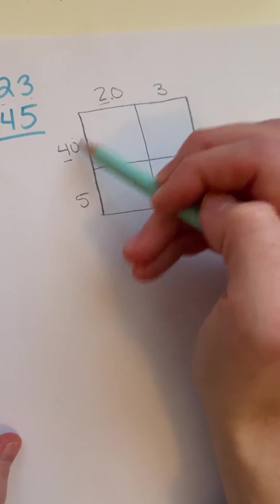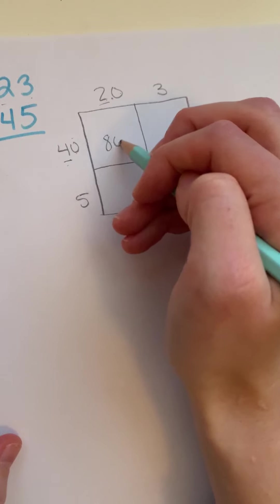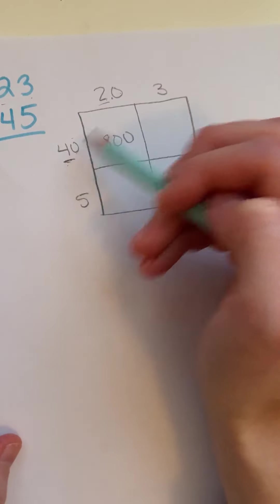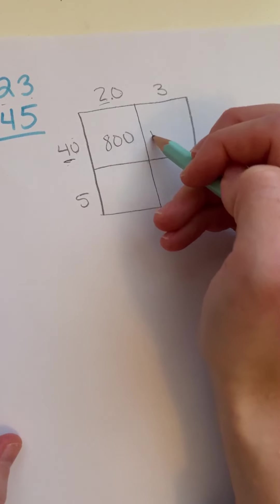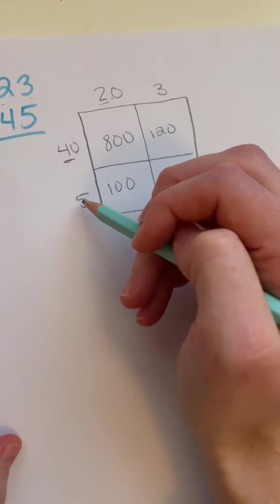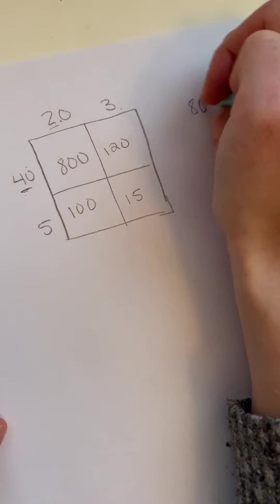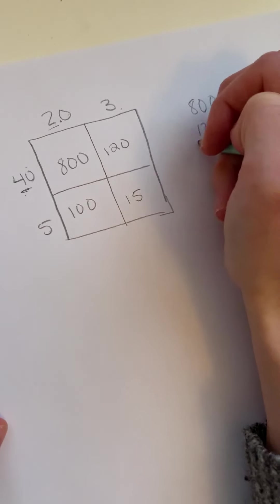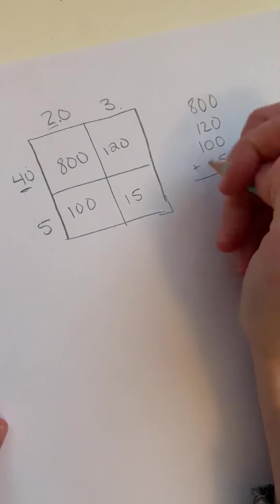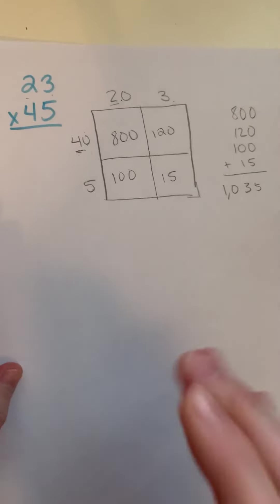So 40 times 20, well 4 times 2 is 8, plus two zeros is 800. Then I can solve this box, 40 times 3, well that would be 120. 20 times 5, that would be 100. 5 times 3 is 15. And then I can go ahead and add up each of those numbers and get an answer of 1035. You've been shown that method.